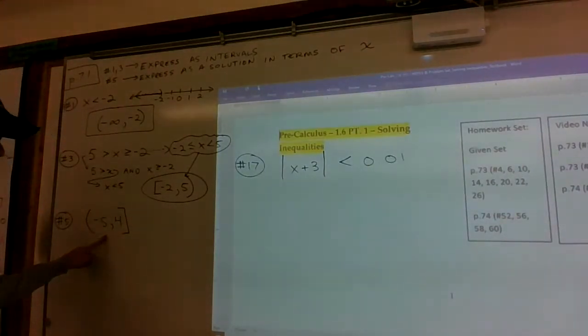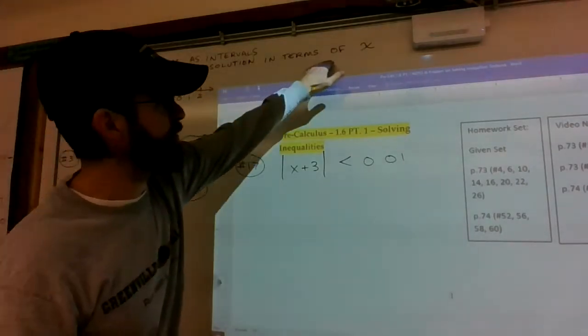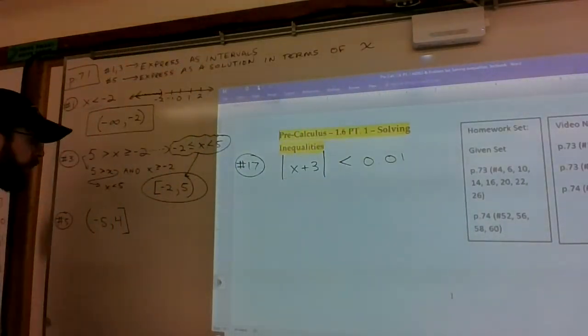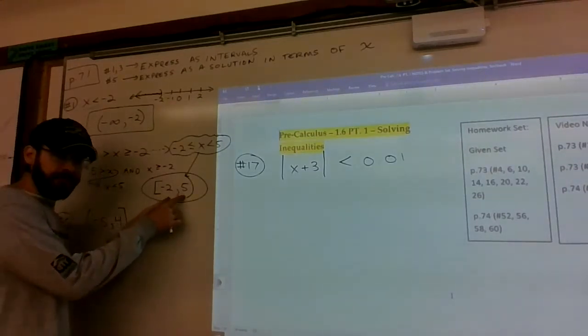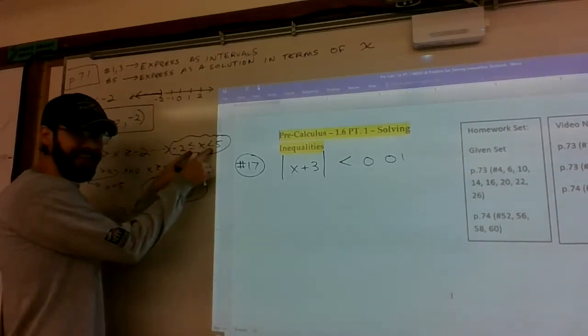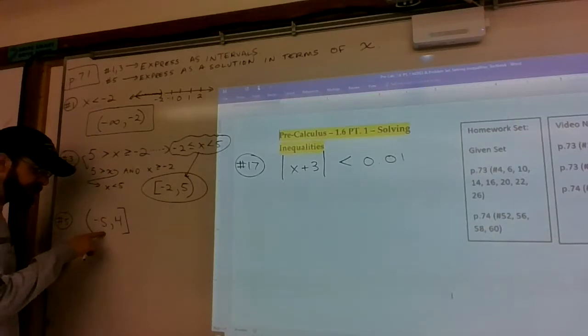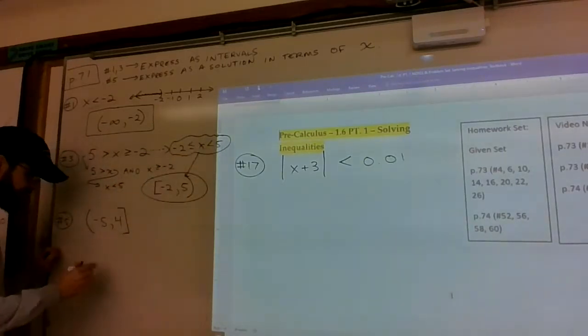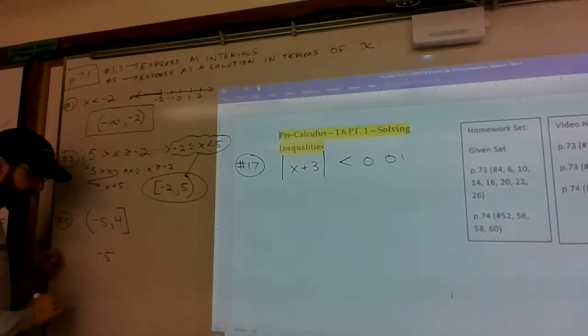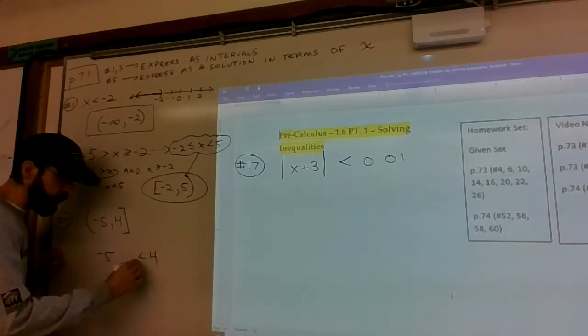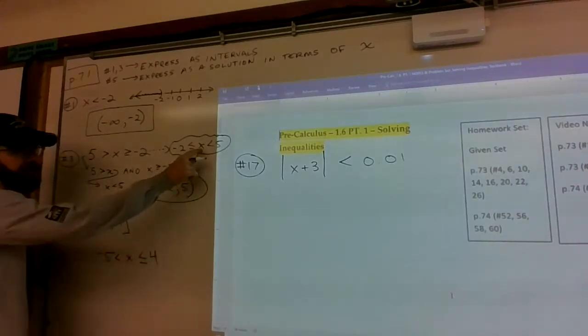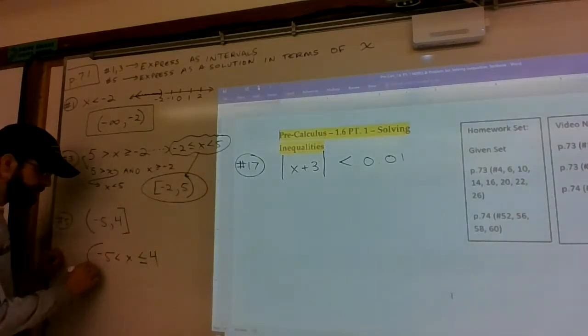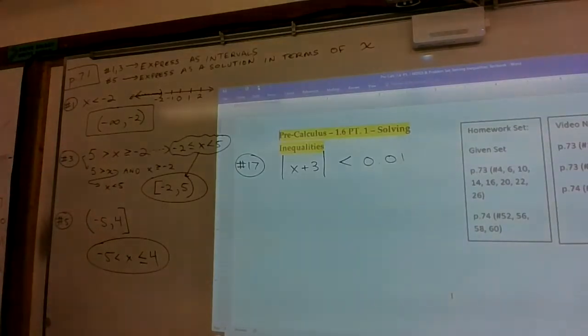Now if you're starting with intervals and trying to go to a solution in terms of x backwards, hopefully you're seeing the connection. This is one of those connected statements that starts with negative 5 and ends with 4. The bracket represents an equal to, the parenthesis represents just a less than with no equal to, and x is in the middle.